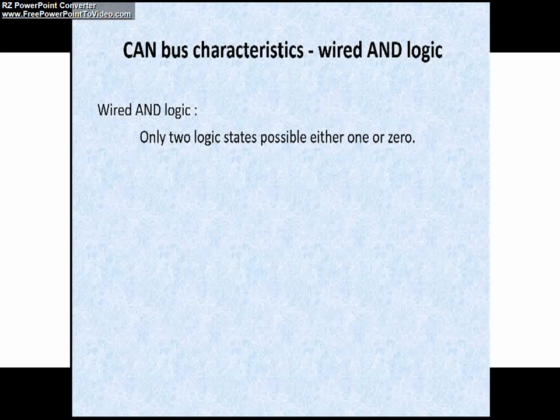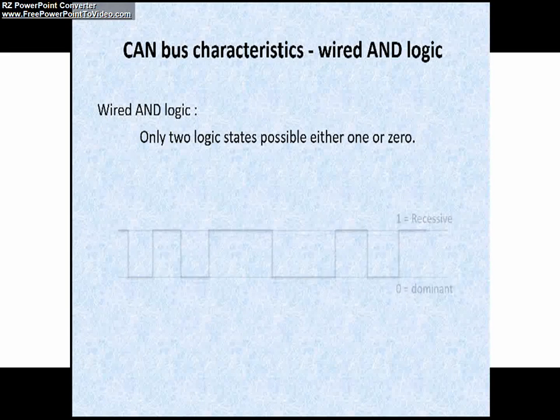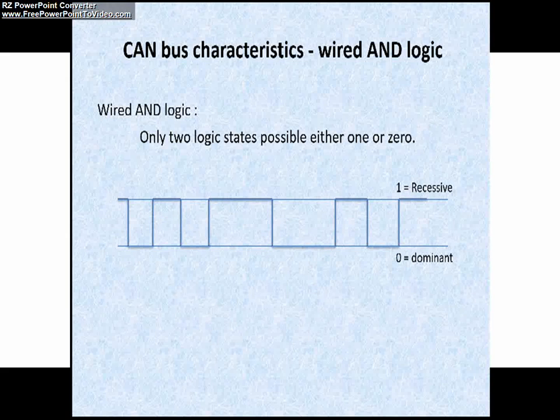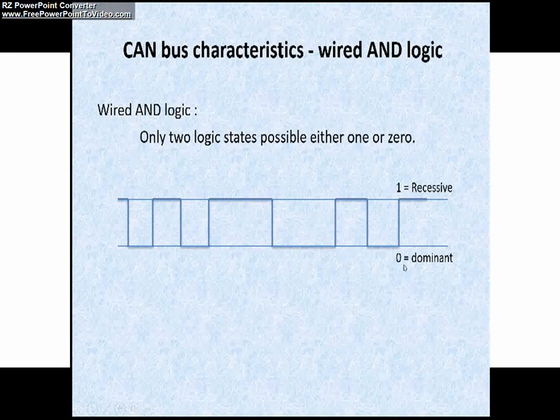Friends, CAN bus uses a wired AND logic. What does it mean? As you all know, AND logic means only two logic states are possible, either 1 or 0, either recessive or dominant bit. You can see in the picture, 1 is represented as a recessive bit and 0 is represented as a dominant bit.